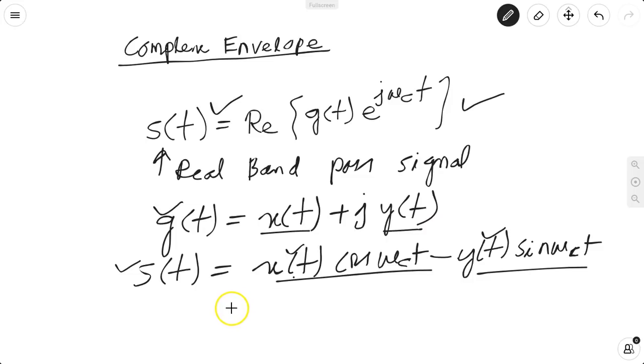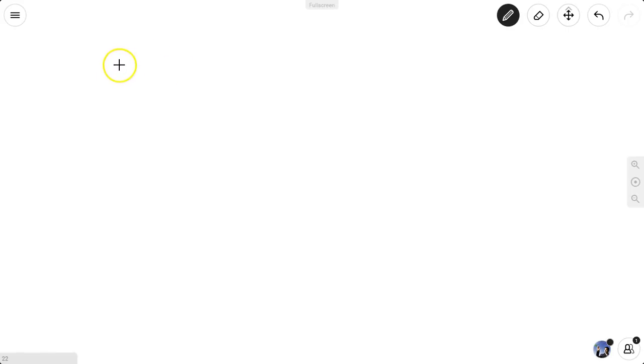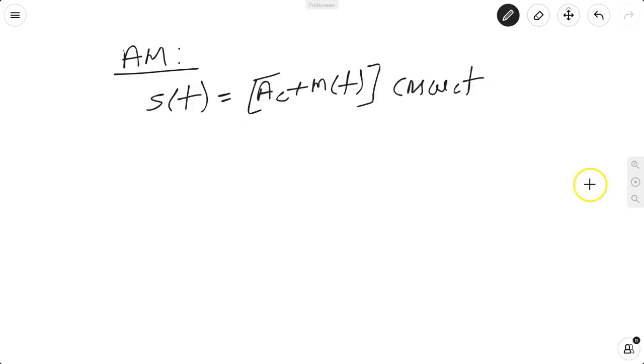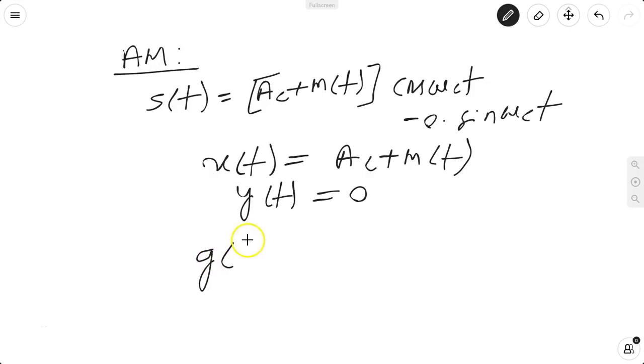Let us illustrate this with an example. What is the complex envelope of an amplitude modulated signal? s(t) = [Ac + m(t)]cos(ωct). Comparing with our prototype real bandpass signal, you have x(t) as Ac + m(t), y(t) as zero. So the complex envelope of this signal is simply Ac + m(t).